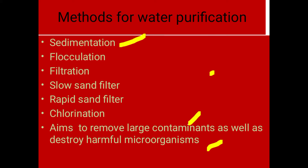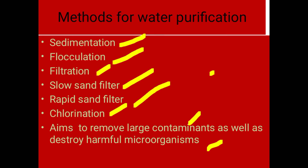The methods for water purification or water treatment are: first, sedimentation; second, flocculation; third, filtration — which is done through a slow sand filter or a rapid sand filter — and we also use the method of chlorination for the purification of water.